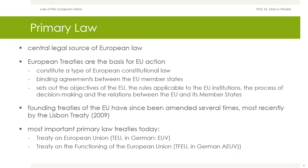In principle, European law is divided into primary law and secondary law; sometimes tertiary law is also designated as a level of regulation. Primary law is the central legal source of European law; the treaties are the basis for European Union actions. As primary law, European treaties constitute a type of European constitutional law. A treaty is a binding agreement between the EU member states; it sets out the objectives of the European Union, the rules applicable for its institutions, the process of decision making, and the relations between the European Union and its member states.